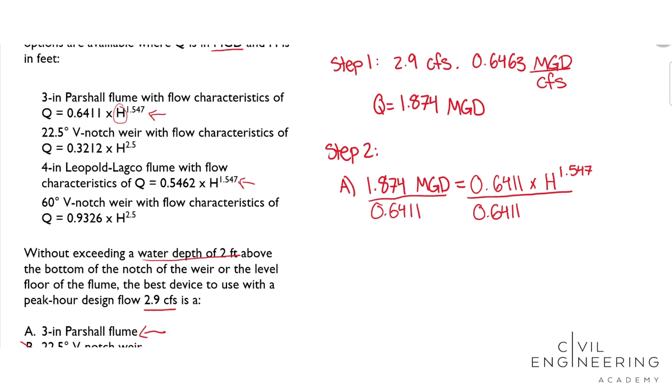And we get 2.924 is equal to H to the 1.547. And then we'll take 1 over 1.547 on each side.